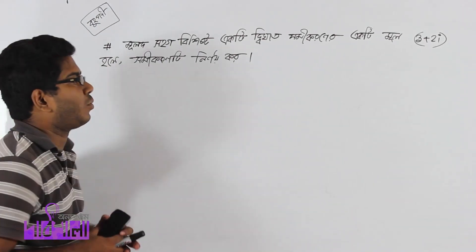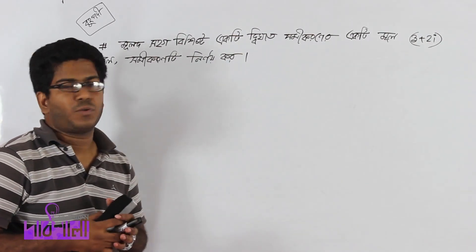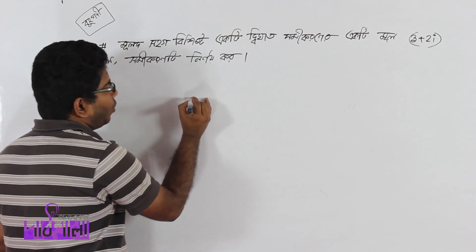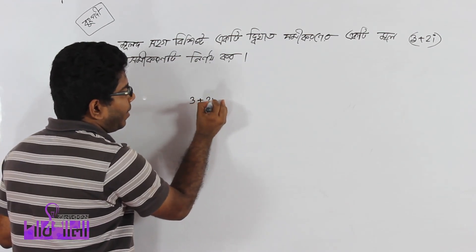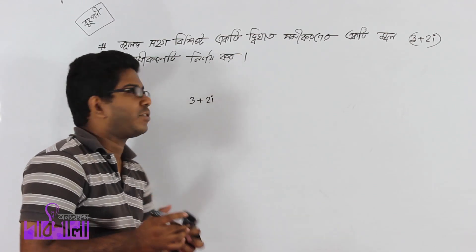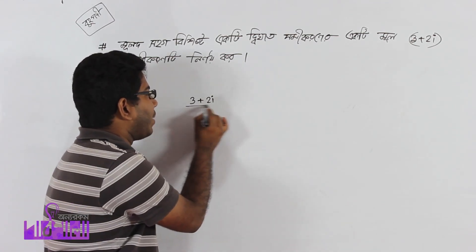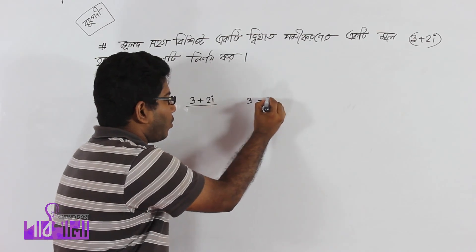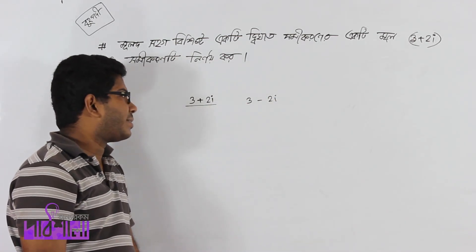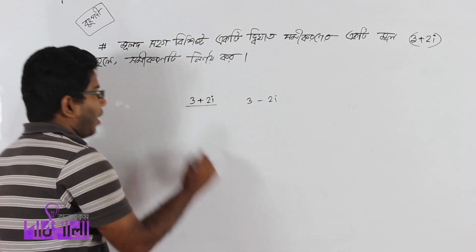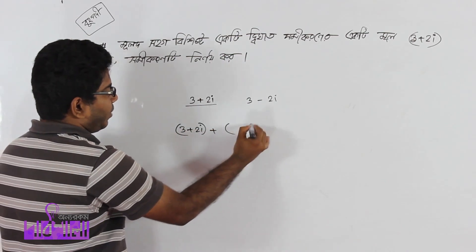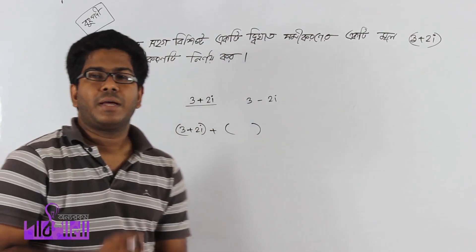পরের প্রব্লেম — মুলত 26: একটি সমীকরণের একটি মূল 3 plus 2i বলে। সমীকরণটি নির্ণয় করো। খেয়াল করো, আমরা যে complex number পড়েছিলাম — conjugate complex number হলো, যদি একটি complex number থাকে তার conjugate complex number হয় অপরটি।